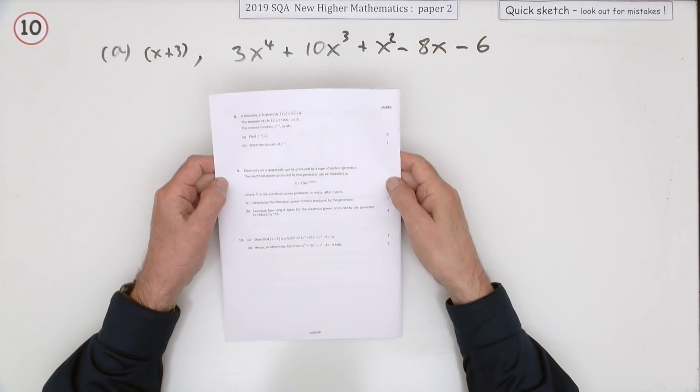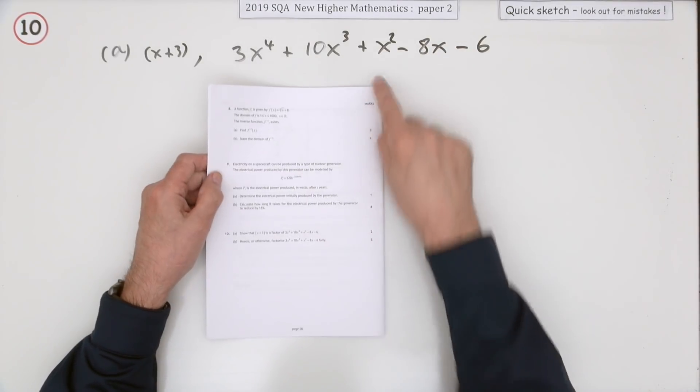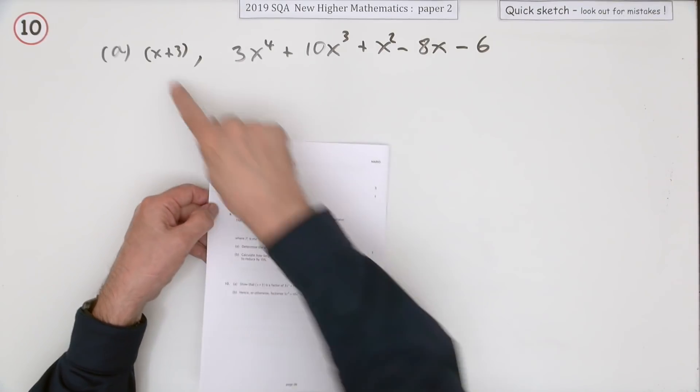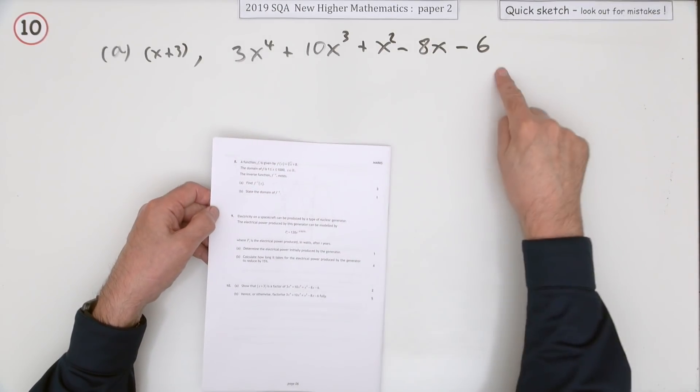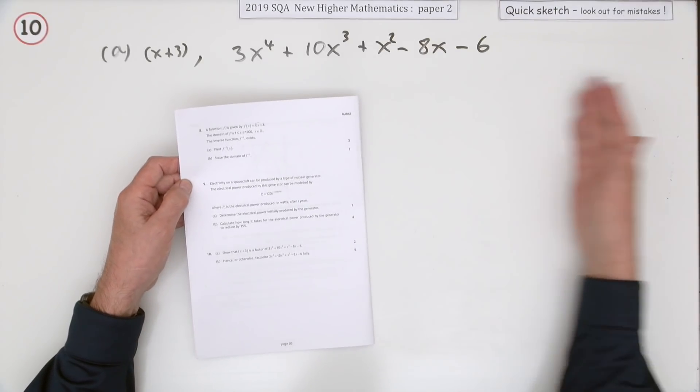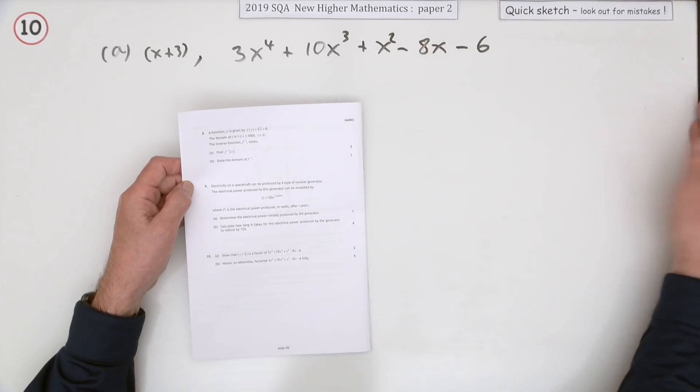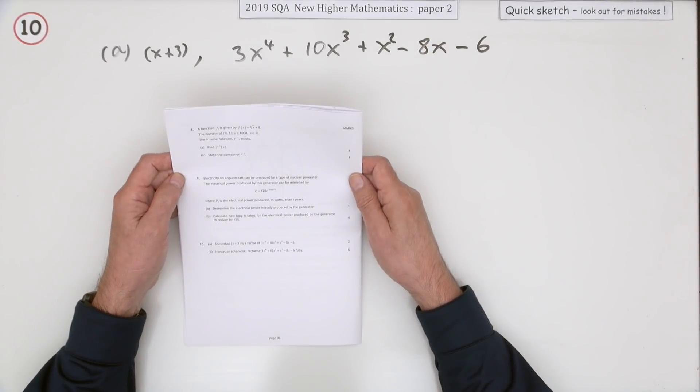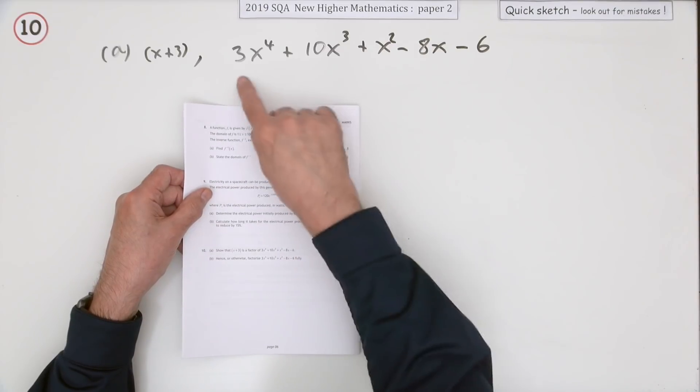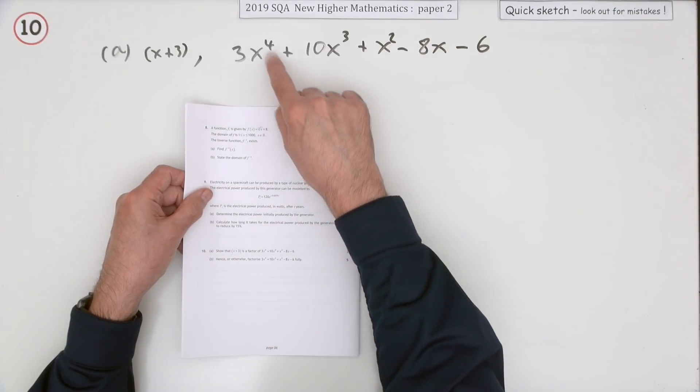Number 10 from paper 2 of the 2019 higher maths. It's a polynomial question, seven marks. Part a: show that x+3 is a factor of this polynomial 3x⁴+10x³+x²-8x-6. You notice it's power 4, but you can still do the same thing with synthetic division, and then you might expect to finish off factorizing it. It will be a little bit longer because it's power 4.